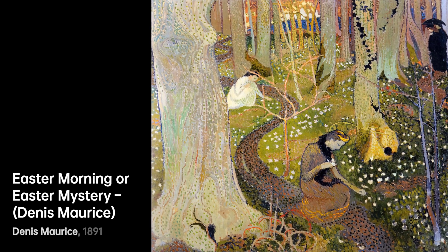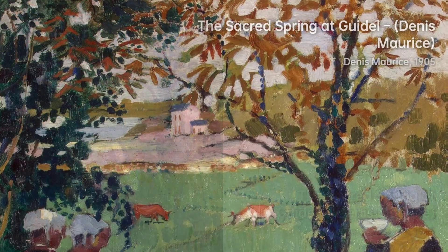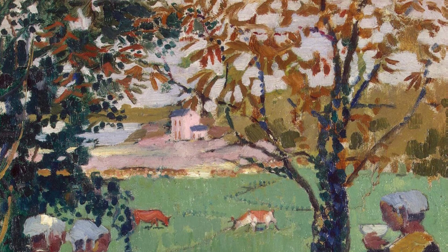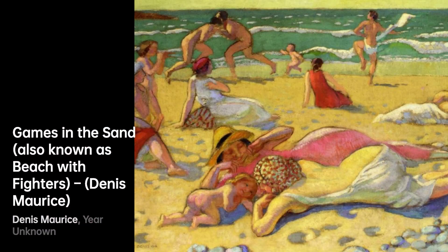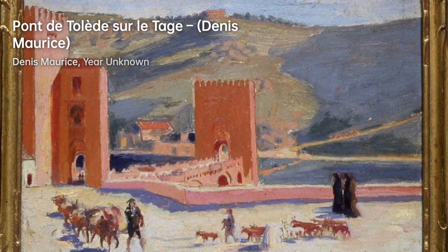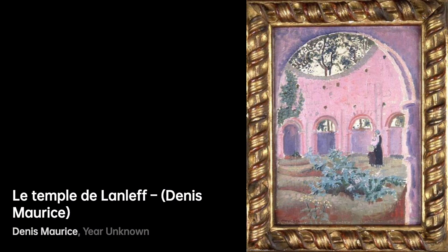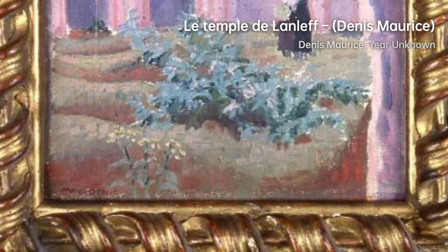During his early years as an artist, Maurice Denis was deeply influenced by the Nabis group, a collective of avant-garde artists who sought to revolutionize the art world. He became friends with artists like Pierre Bonnard and Édouard Vuillard, who shared his vision of creating art that was spiritual and meaningful. Together, they explored new techniques and styles, breaking away from the traditional norms of the time. Denis believed that art should be accessible to everyone and should convey a sense of spirituality, and his paintings often depicted scenes from everyday life, infused with vibrant colors and symbolism.